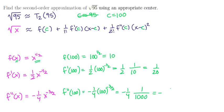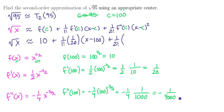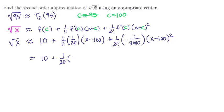Plugging these values into the Taylor polynomial coefficients, the square root of x is approximately 10, plus one twentieth times x minus 100, plus one half times negative one four thousandth times x minus 100 squared. Cleaning that up, we get 10 plus one twentieth times x minus 100, minus one over eight thousand times x minus 100 quantity squared.